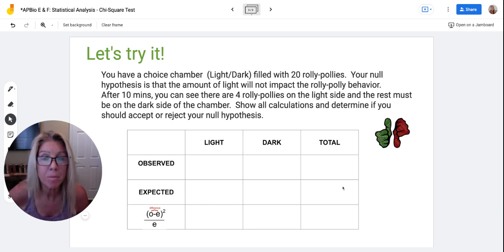So you use a table like this to quickly calculate your chi-square value. So if you want to pause right now and see if you can do that, and then I'll help you through it.